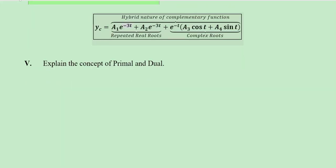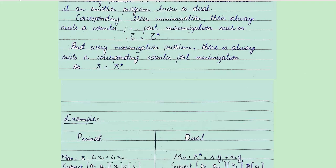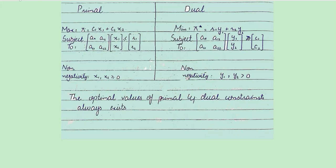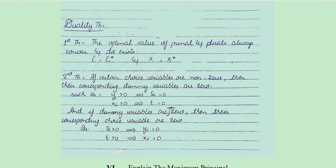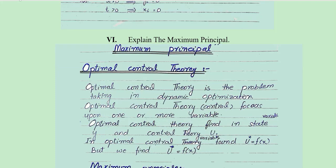The fifth part is about the primal and dual. The theory of it is given here. You can pause the video and try to make sense of it and remember it. No numericals are required here.